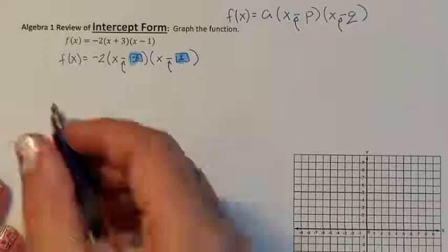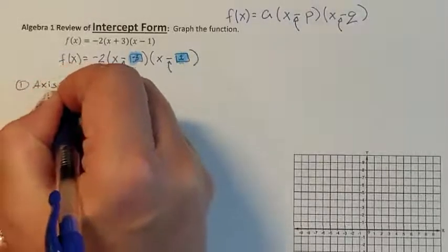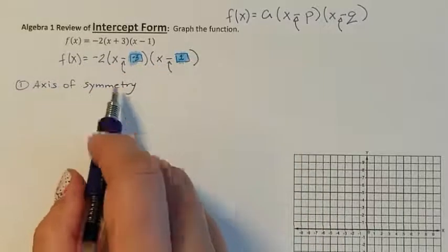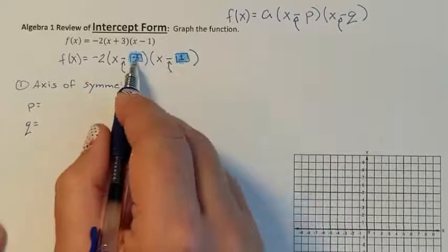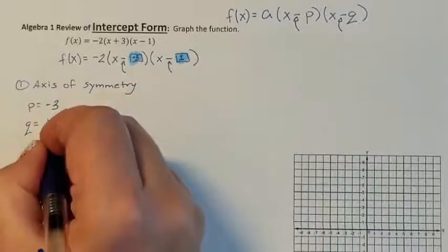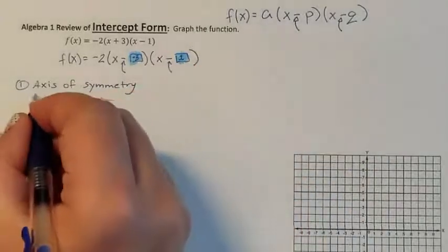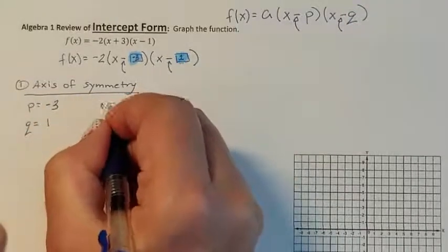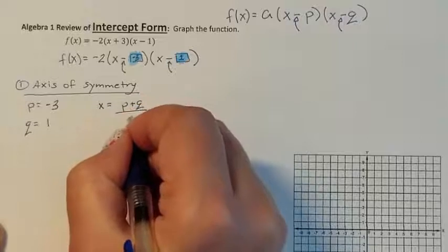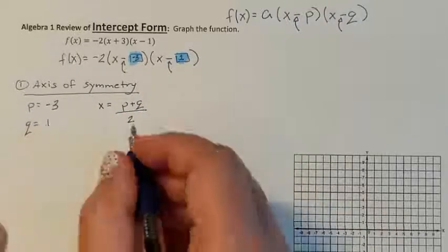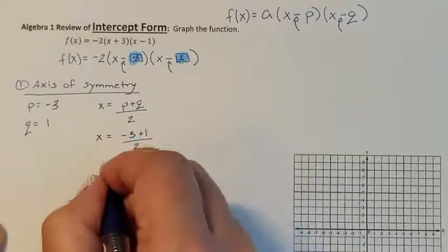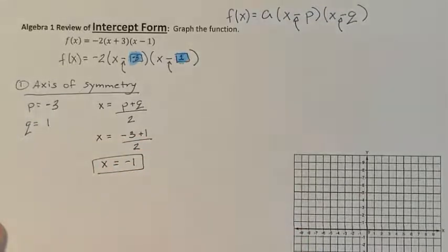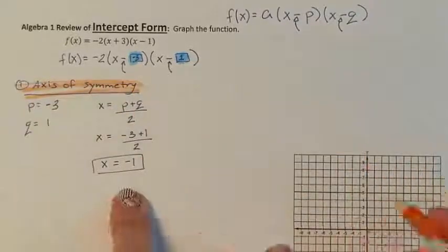The very first thing I need to do when I graph is find the axis of symmetry first. How do I find my axis of symmetry in intercept form? It's just your p and your q. So my p is a negative 3. My q is a 1. Axis of symmetry has an equation. It's x equals p plus q in the numerator, all divided by 2. I want the middle of my p's and q's. So x equals a negative 3 plus 1, all divided by 2. So I have x equaling a negative 1 as my axis of symmetry. I need to come over here and graph my axis of symmetry. So x equals negative 1.